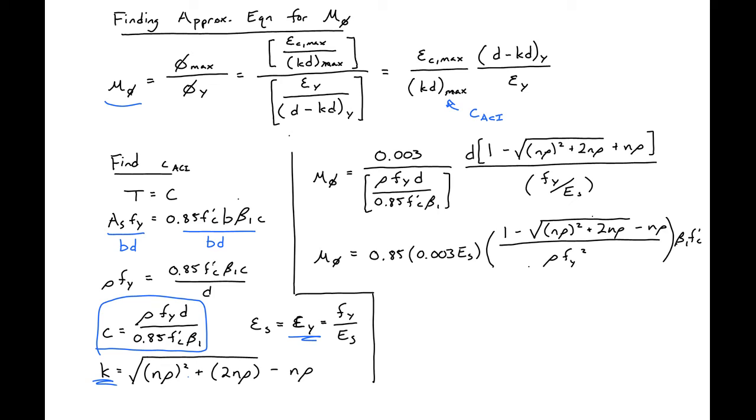We can simplify our curvature ductility and get this expression here. Then we'll need to make an approximation. The first thing is our rho*N will be significantly less than 1, and N will also be less than our square root of (N*rho)^2 + 2*N*rho expression.